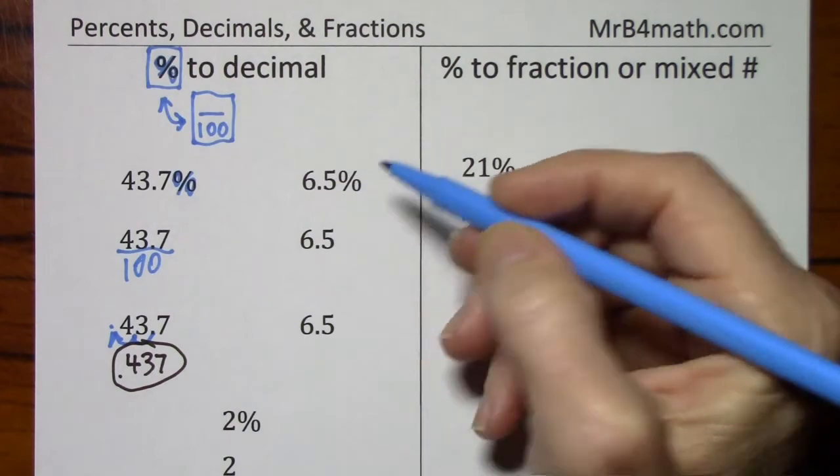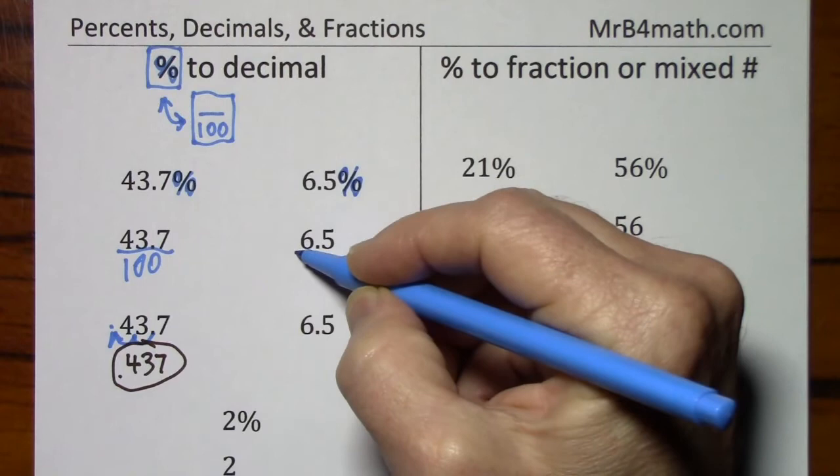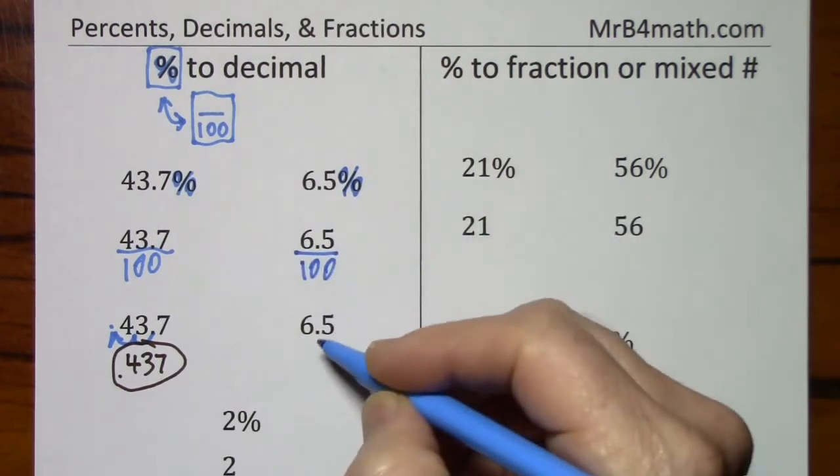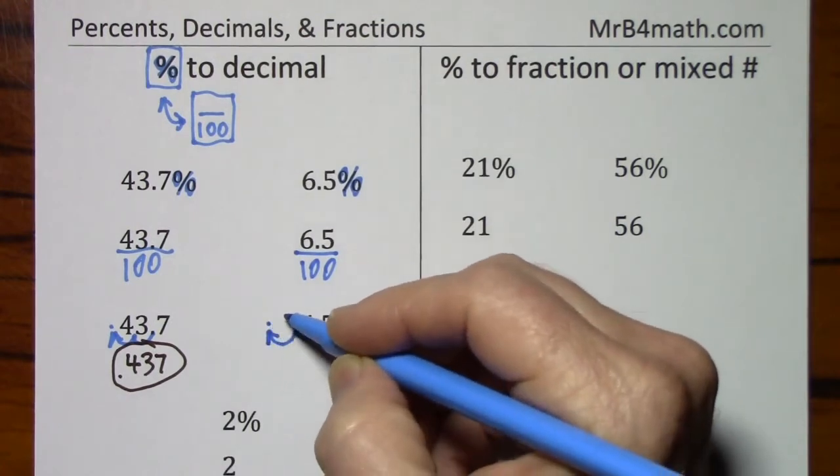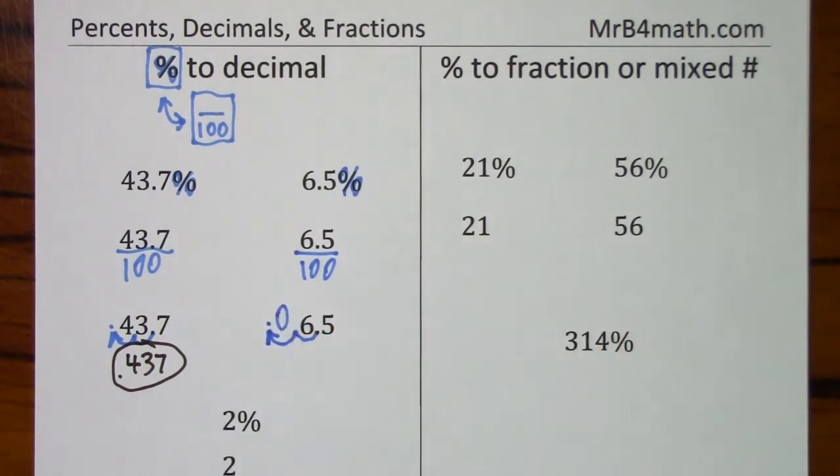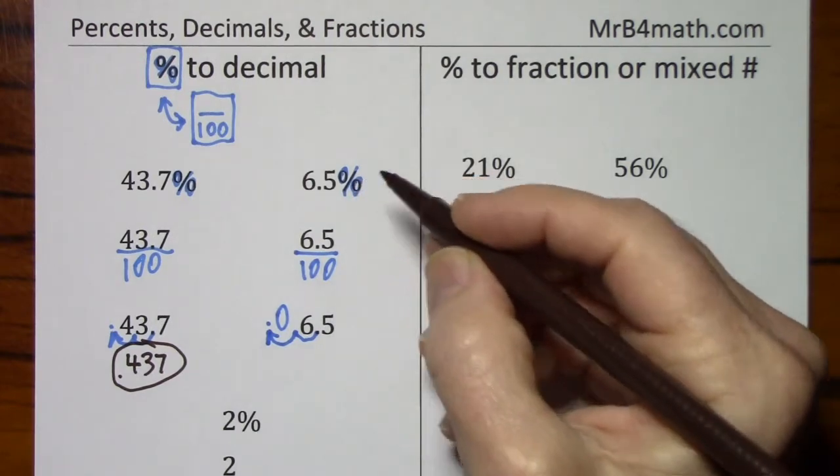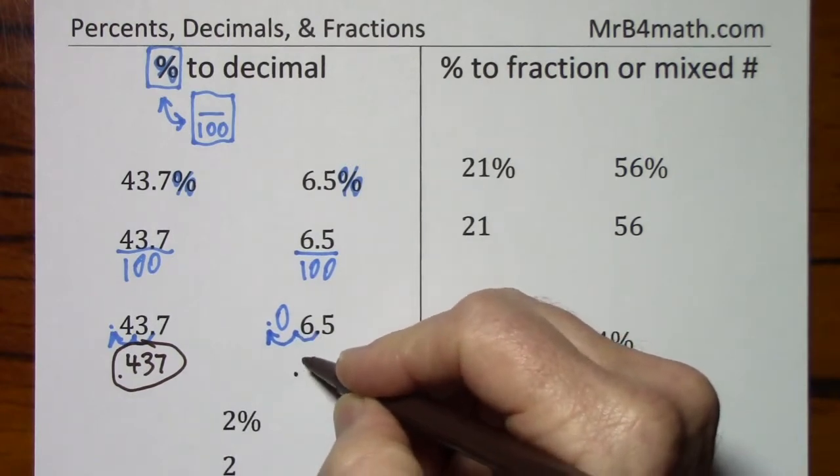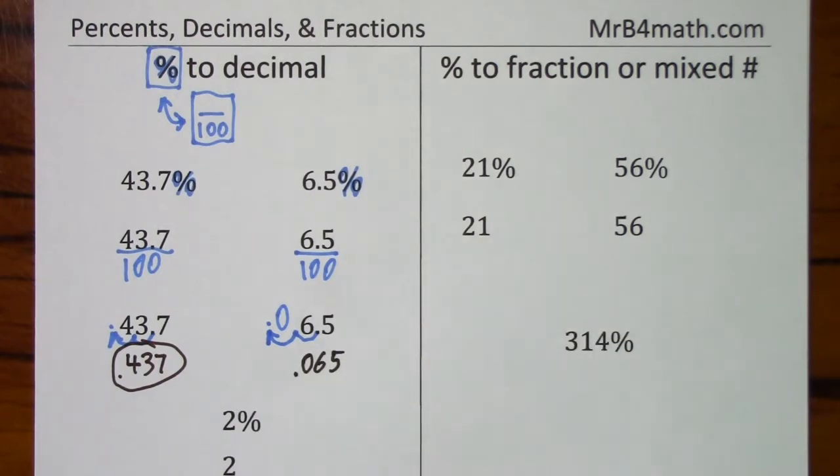So again, if I have 6.5%, the percent sign means per 100. When you divide by 100, you move the decimal two places. I'll need a zero to hold that place. So 6.5% written without a percent sign is 65 thousandths.